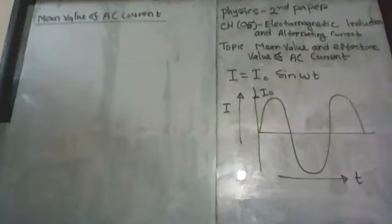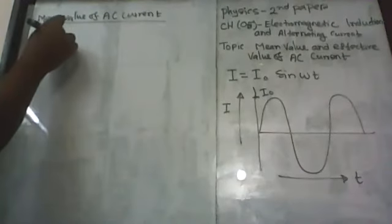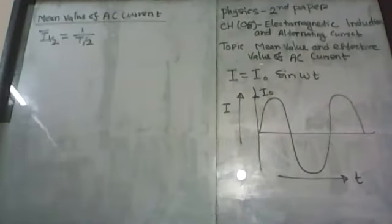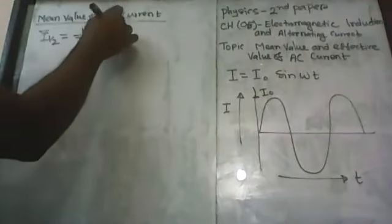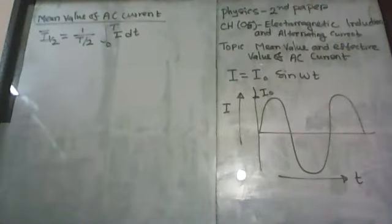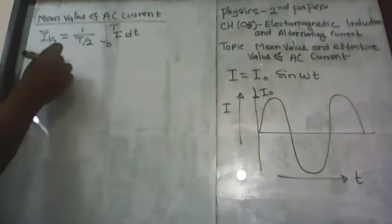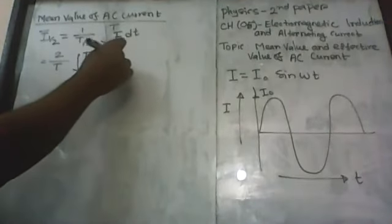I'm going to calculate the mean value or average value of AC current for the case of half cycle. The average value is equal to 1 divided by T/2, because I'm taking the amount of time of half cycle. So I_average = (2/T) × integral from 0 to T/2 of I dt, which equals (2/T) × integral from 0 to T/2 of I₀ sin(ωt) dt.